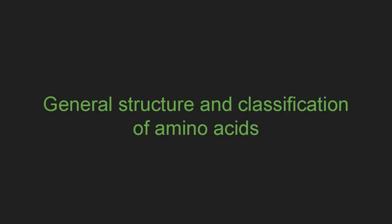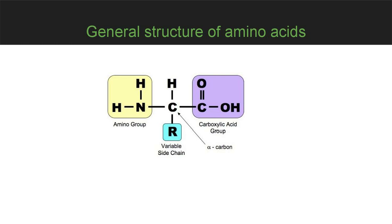With one exception — proline — all proteinogenic amino acids found in protein structures contain three main parts: an amino group, which has basic properties; a carboxylic group, which has acidic properties; and a variable side chain, which gives specific properties to amino acids and proteins. All three parts are connected by an alpha-carbon atom, which has four bonds.